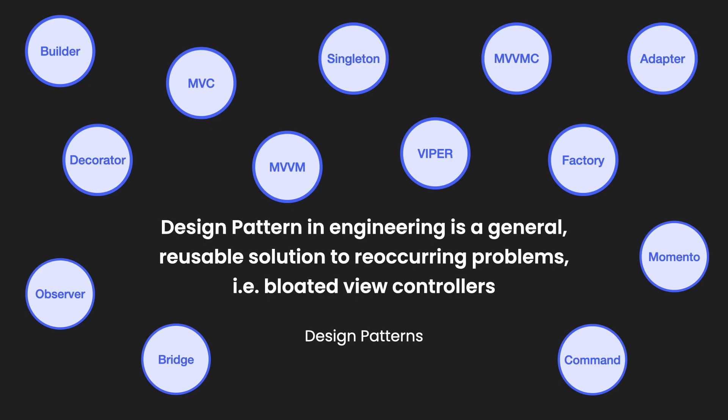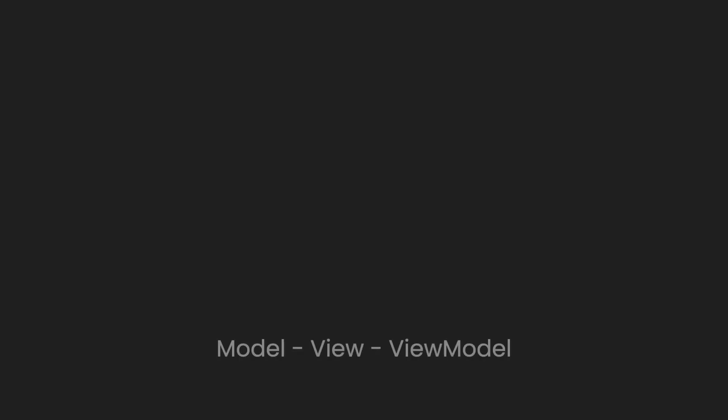Breaking down MVVM a bit more: what does it actually stand for? MVVM stands for Model-View-ViewModel. Starting at the tail end, we have our Model. The Model is basically a single source of truth — it's our data structure. If we ever have some data we need to represent in the app, we create it in a Model. This can be either a struct or a class. The Model's responsibility is just to define the data source.